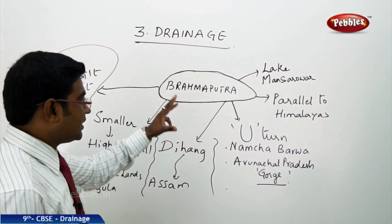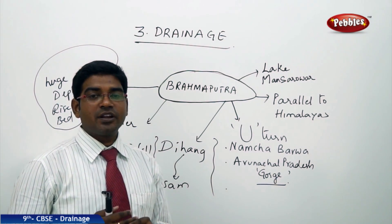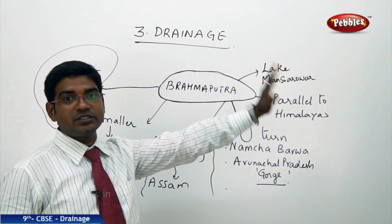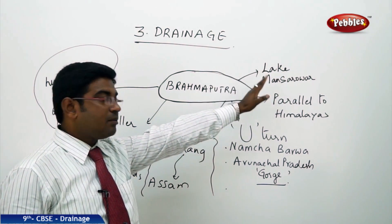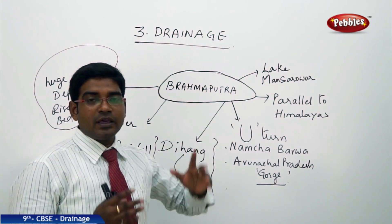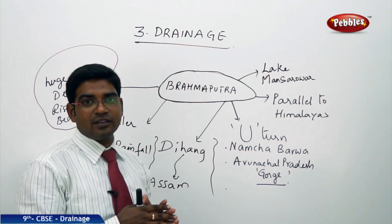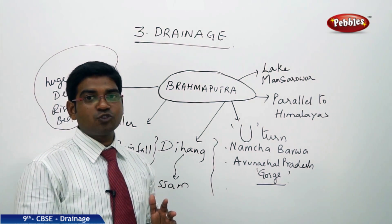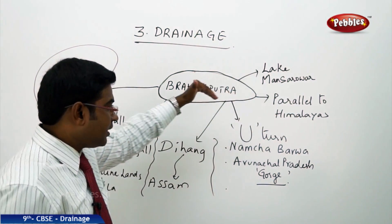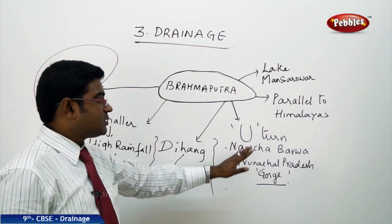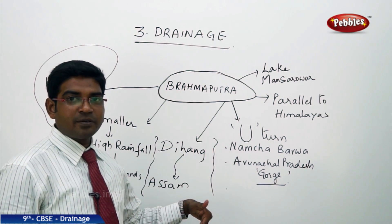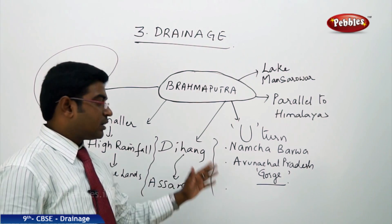Now we shall discuss the third important Himalayan river: River Brahmaputra. River Brahmaputra also originates very close to where River Indus originates, near Lake Mansarovar. It moves parallelly to the Himalayas. Brahmaputra actually travels more distance than River Indus, but that portion is outside India. It takes a U-turn at the Namcha Barwa mountain range and then enters Arunachal Pradesh, creating a gorge.